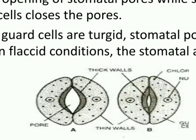During the time stomata remains open, in the guard cell the turgor pressure increases, meaning the osmotic pressure of the guard cell increases. Due to this, endosmosis takes place — water from the surrounding subsidiary cells enters the guard cell. As a result, the outer thin wall expands outward, creating tension on the inner thick wall, which is pulled and causes stomata to remain open during daytime.